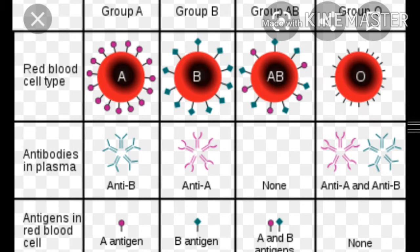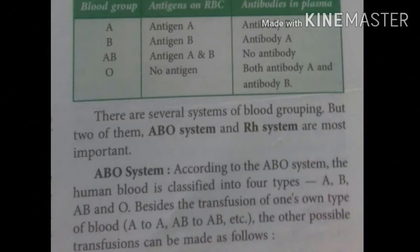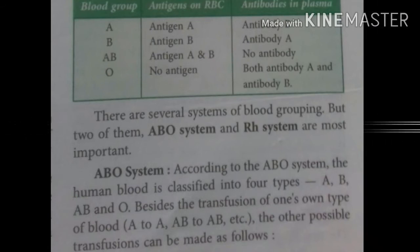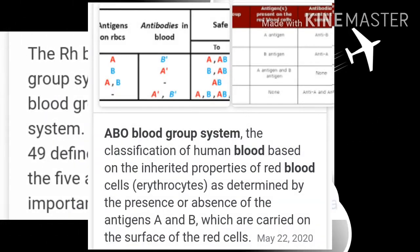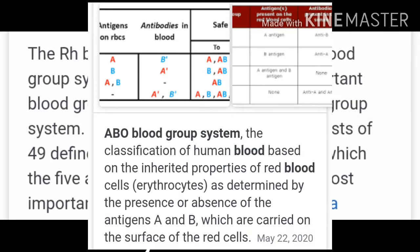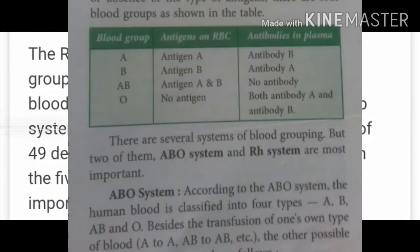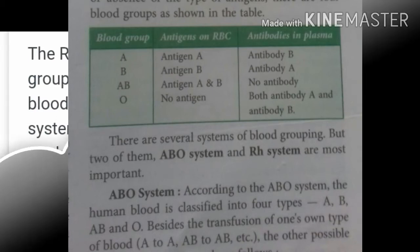The blood group O can donate blood to all blood groups. Blood group A can receive blood from blood groups A and O, but it can donate blood to blood groups A and AB. Blood group B can receive blood from blood groups O and B, and it can donate blood to blood group AB. However, blood group O can receive blood only from blood group O.